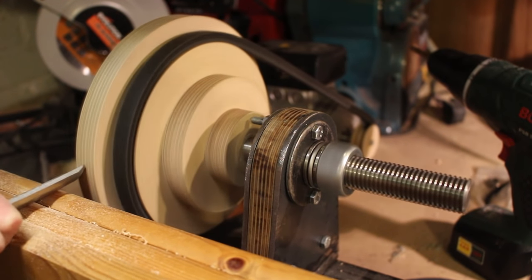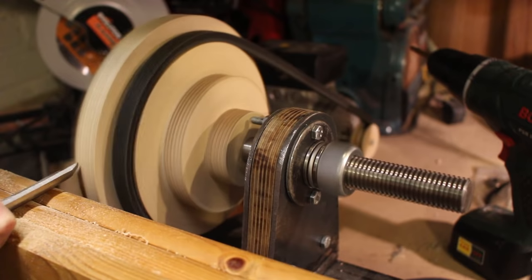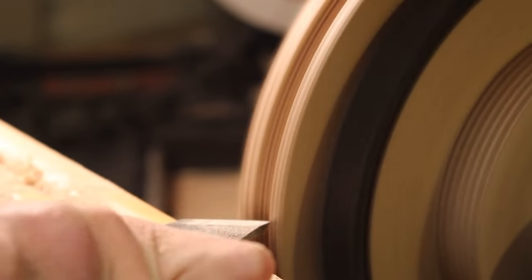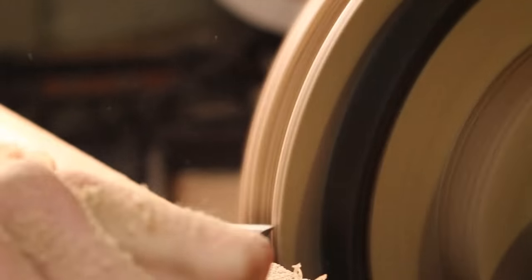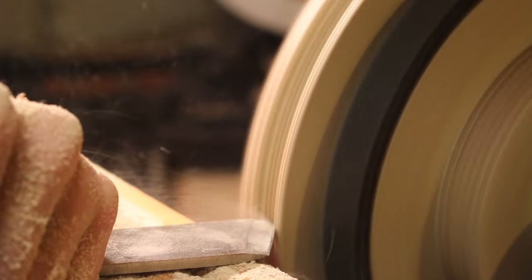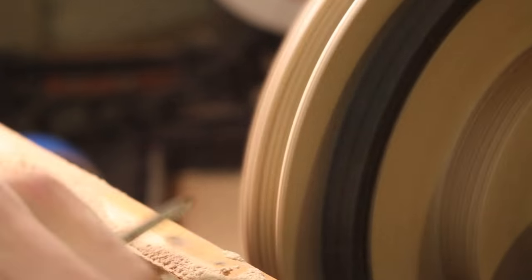While it's running like this it doesn't have very much power because the belt slips very easily so I just very gently turn away the wood to make it completely round on the outside pulley and then also remove the material to make it into a V-shape to fit perfectly around the V-belt.